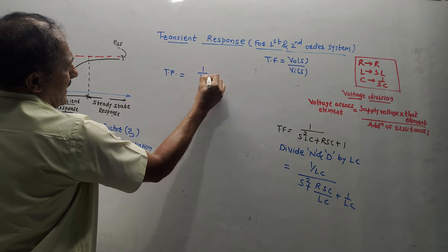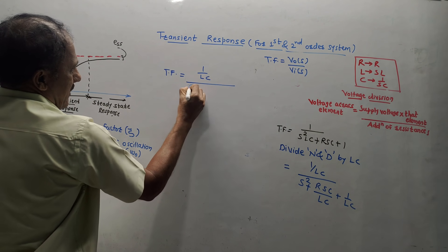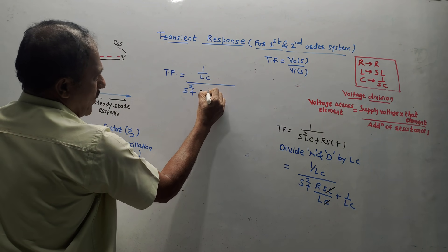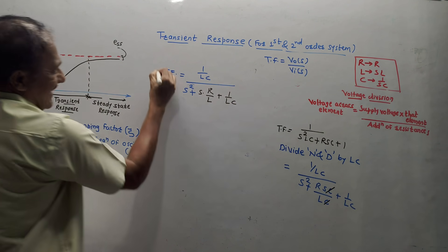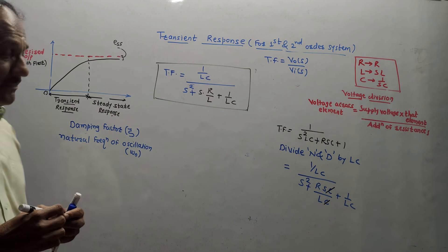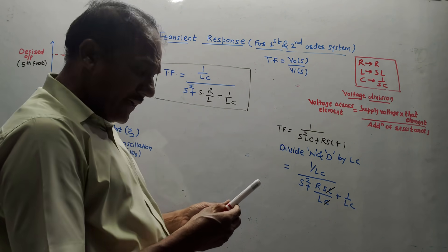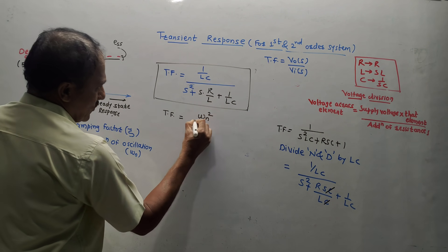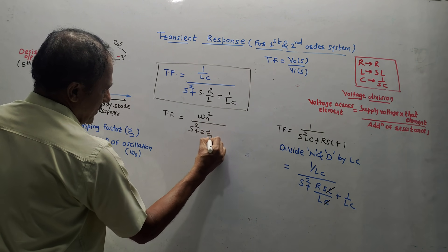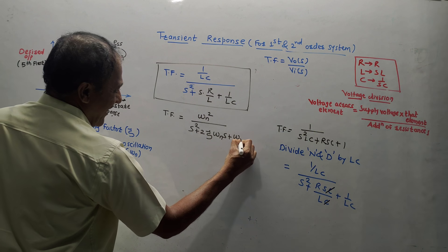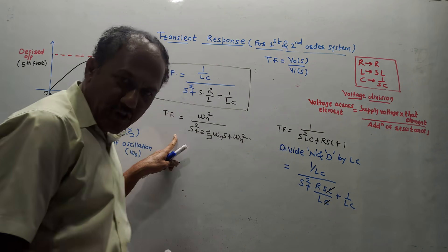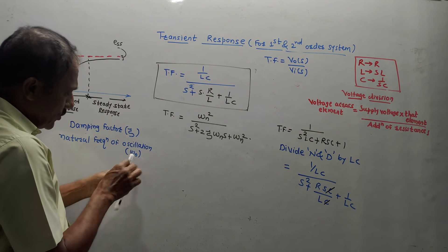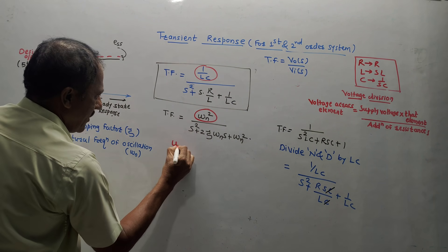The standard equation for the transfer function of a second order system is: ωn² divided by (S² + 2ζωn·S + ωn²). We will now compare our derived equation with this standard equation to find the values of ωn and ζ.